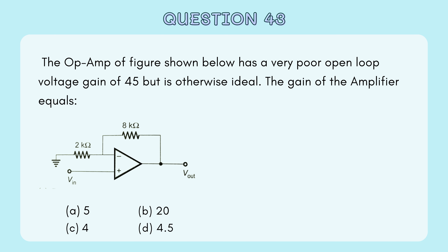I am taking a question based on the operational amplifier. The op-amp shown in the figure below has a very poor open loop voltage gain of 45 but is otherwise ideal. We need to find the gain of the amplifier.